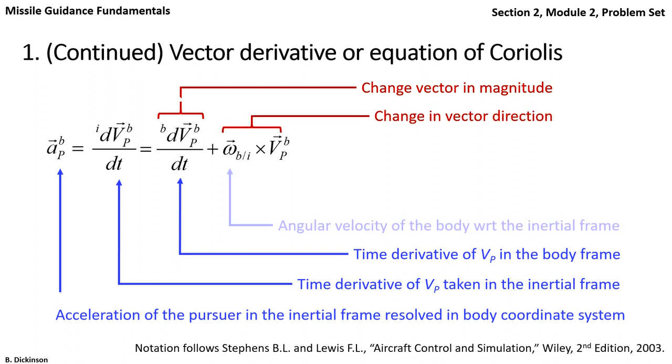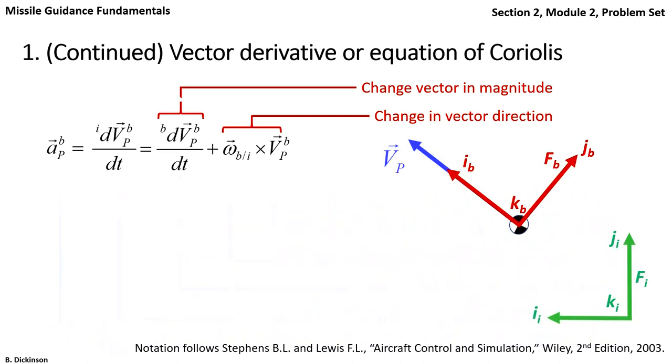Now going back to our frames and coordinate systems, let's focus on this velocity vector. We said it was constant, so immediately we can get rid of the first term.